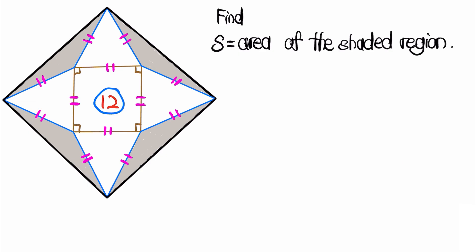To start, let's explore the diagram a bit and figure out what figure the outer quadrilateral belongs to. To do this we'll do a bit of simple angle chasing. We know that this angle is 60 degrees and this is also 60 degrees since they are equilateral triangles. Then this angle over here is equal to 360 minus 90 minus 2 times 60 degrees.